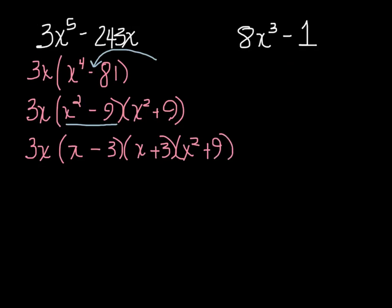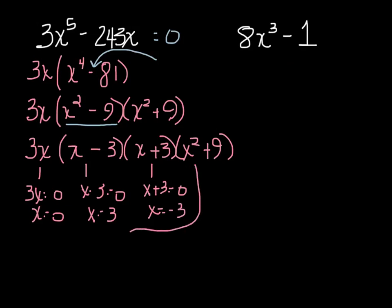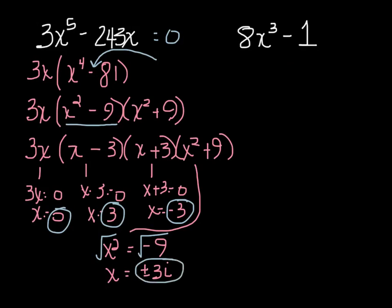If I wanted to solve this, so if I went ahead and add equals 0 here, I would set all of these equal to 0. So this would be 3x equals 0 so x equals 0, x minus 3 equals 0 so x equals 3, x plus 3 equals 0 so x equals negative 3, and this one would be x squared equals negative 9. Take the square root of both sides so x equals plus or minus 3i. So I actually have five solutions: 0, 3, negative 3, and plus or minus 3i.